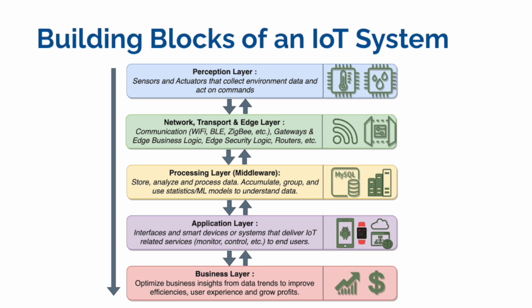Now we'll look at the building blocks of an IoT system. It generally starts from the perception layer — that's where you have your sensors and actuators. Sensors collect environmental data and actuators can act on commands, depending on what change is needed to ensure the process you're working on runs perfectly.